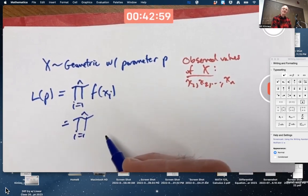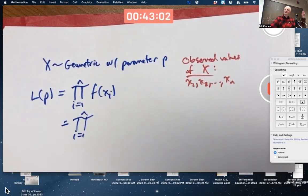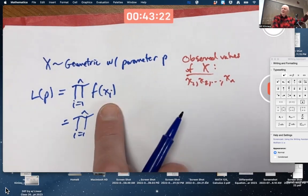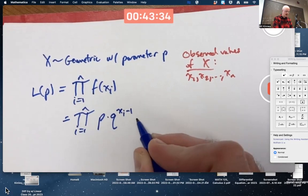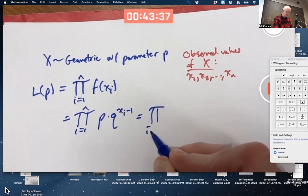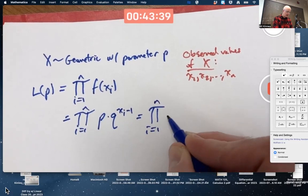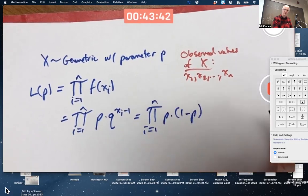Oh, you may not remember that. Number of trials until the first success. So you've got a certain number of failures before the first success. And by independence, you end up multiplying the probability of failure. Xi minus one times, and then times the probability of success once. P times Q to the Xi minus one. But we really want to get everything in terms of P.